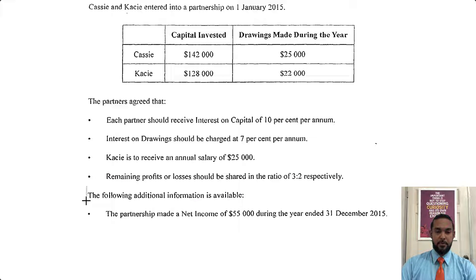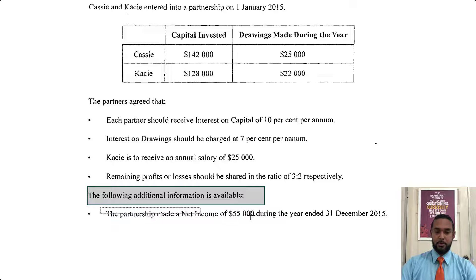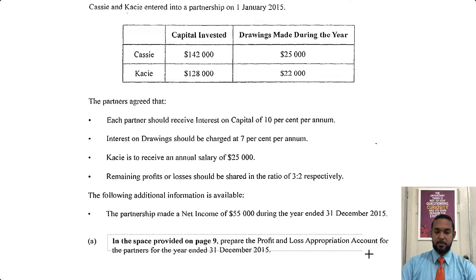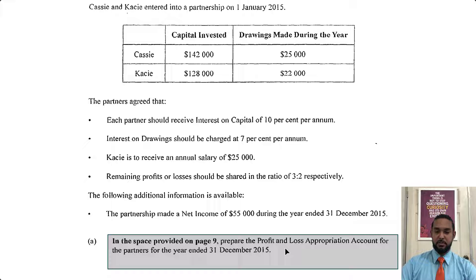And then we have the following additional information available. The partnership made a net income of $55,000 during the year ended 31st December 2015. And they want us to prepare the profit and loss appropriation account for the partners for the year ended 31st December 2015.